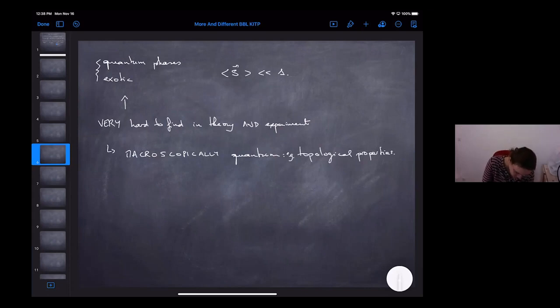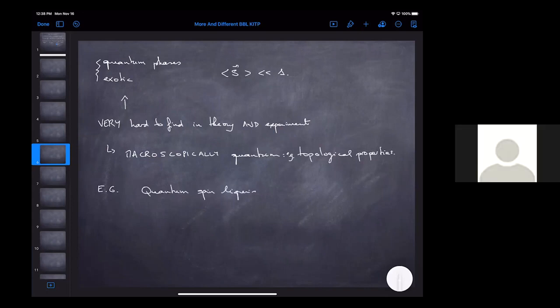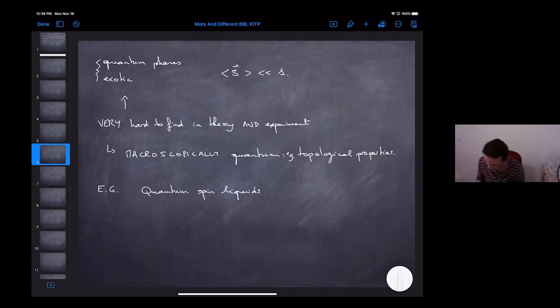Microscopically quantum. So you might have some topological properties. Let me now move on to explain in more detail what we are doing. One example of these phases in magnetism is quantum spin liquids, and a large fraction of the participants in this program are interested in this.